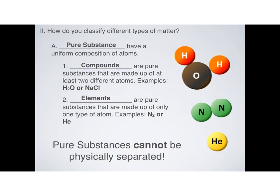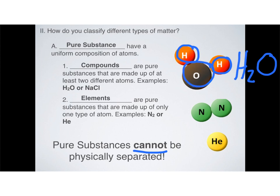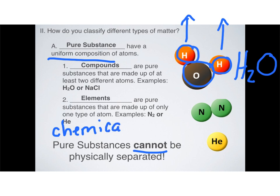One of the most important things to realize about pure substances is that they cannot be physically separated. Let's use water as our example: water is always made up of two hydrogens and one oxygen. It is not possible through physical changes to separate the hydrogen from the oxygen in water. That's what uniform composition means — the composition doesn't change. Chemical changes, however, can be used to separate hydrogen and oxygen from water, but no physical change can do that.